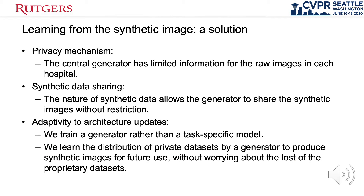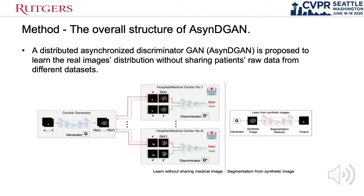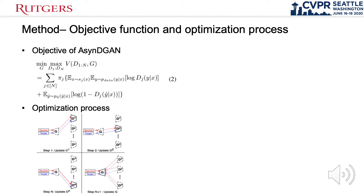Our solution is to use synthetic images learned from multiple data centers as a data provider without real image leakage, and to adapt future solution updates. Authentic GAN could aggregate data from multiple data centers without transferring real images, and the central generator will be used as the data provider for the downstream segmentation task. Authentic GAN accumulates losses across all discriminators and then updates the central generator.